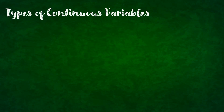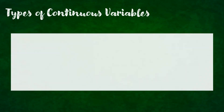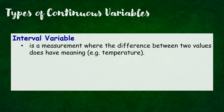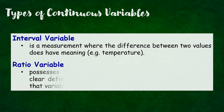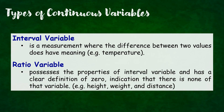Continuous variable can be further classified into two types. We have interval variable, where it is any variable that is a measurement where the difference between two values does have meaning. For example, we have temperature. On the other hand, ratio variable possesses the properties of interval variable and has a clear definition of zero, indicating that there is none of that variable. For example, we have height, weight, and distance.